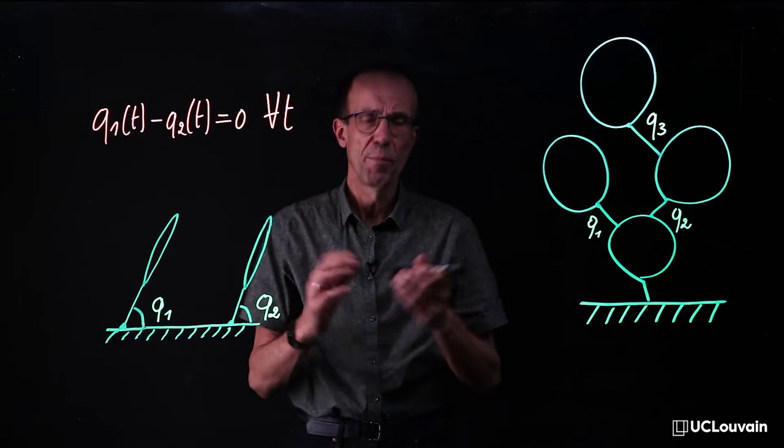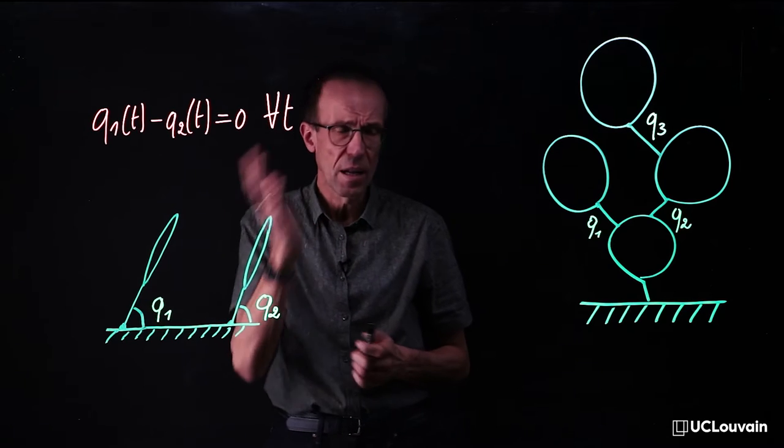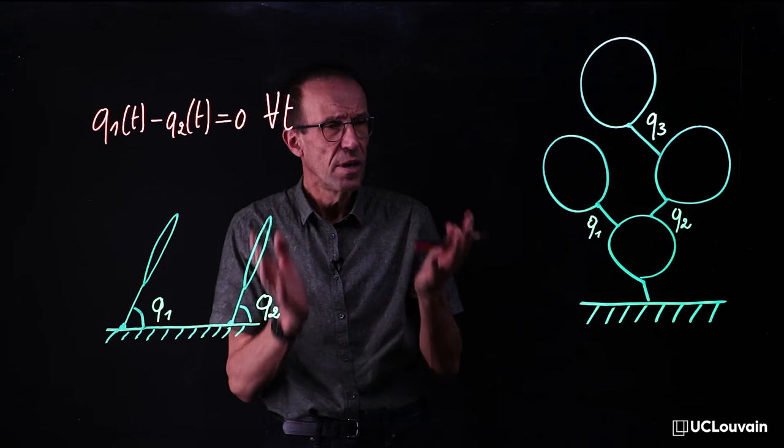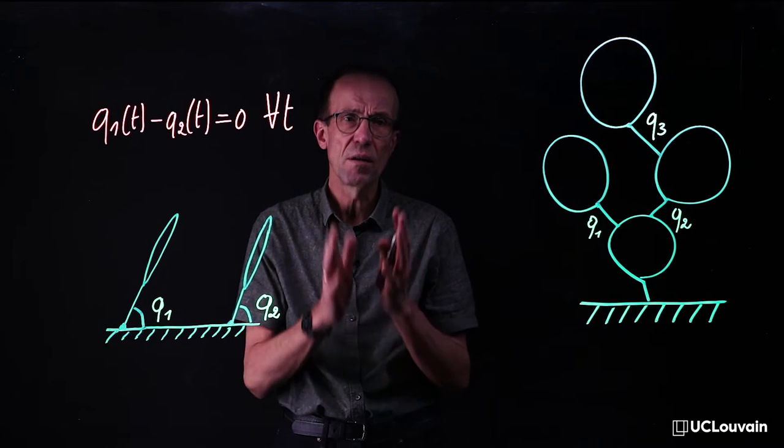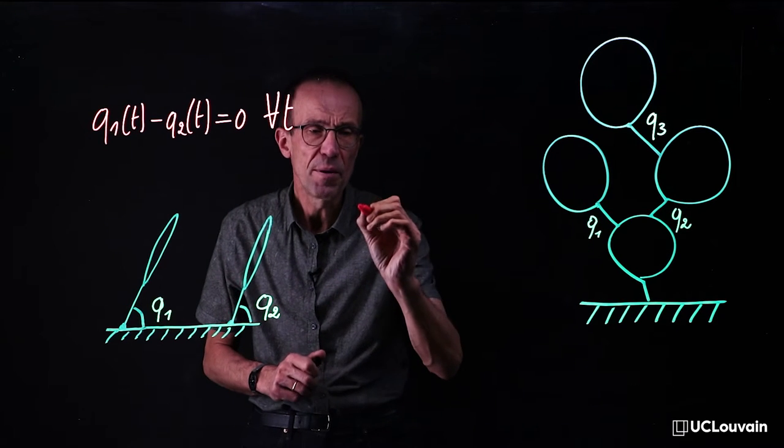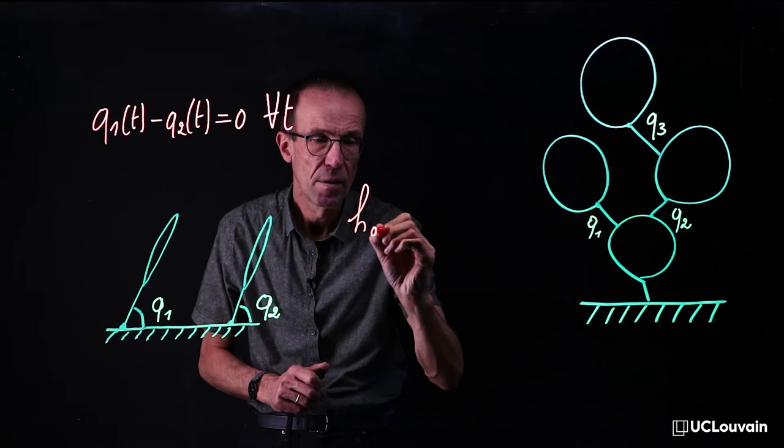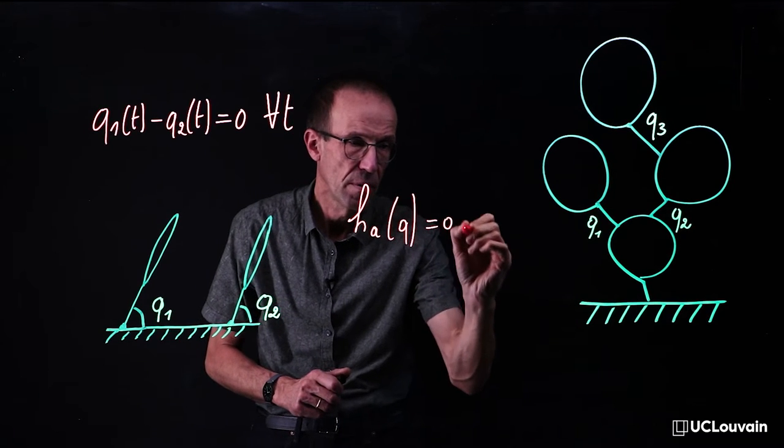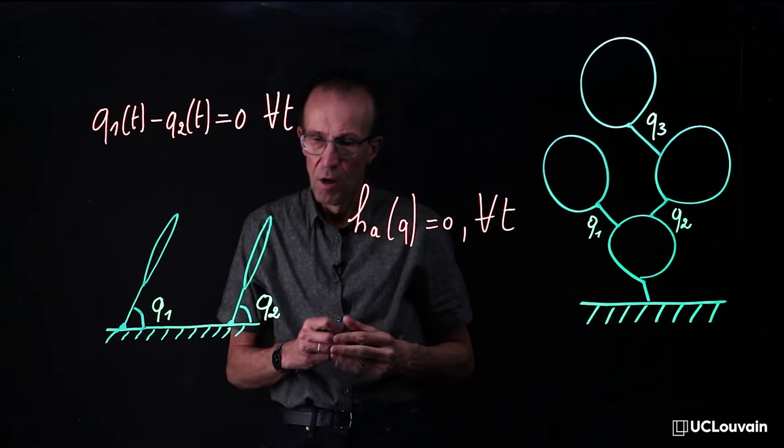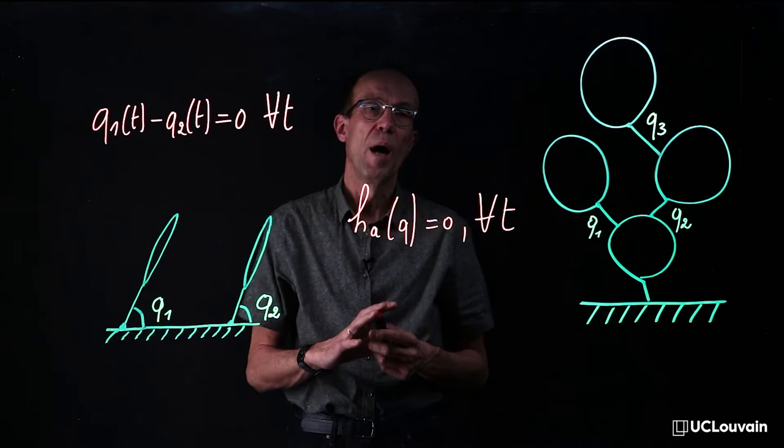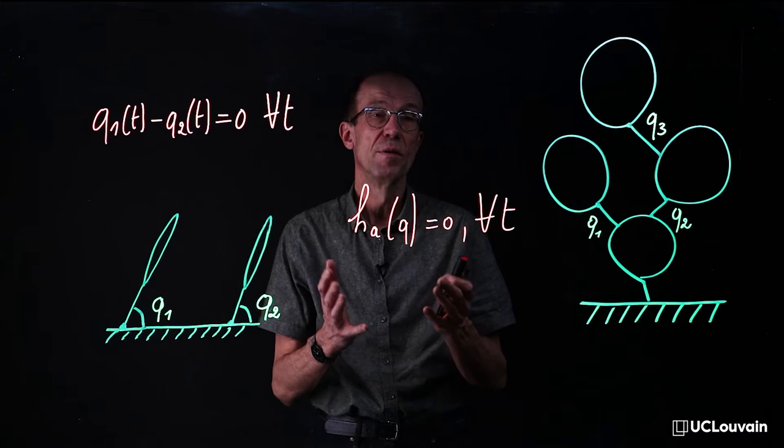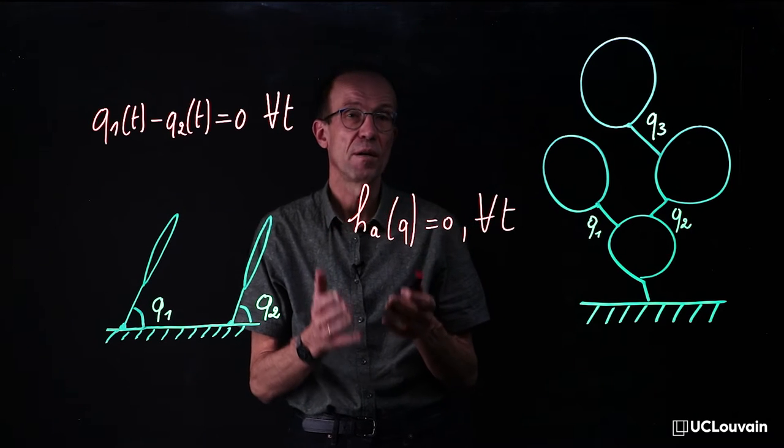From an equational point of view, all these algebraic constraints applied on the system, whatever their origin, will be gathered into a single column vector HA that will be written in an implicit form like this. Such systems are denoted as constraint multi-body systems. They require a specific treatment, and this will be the subject of this module.